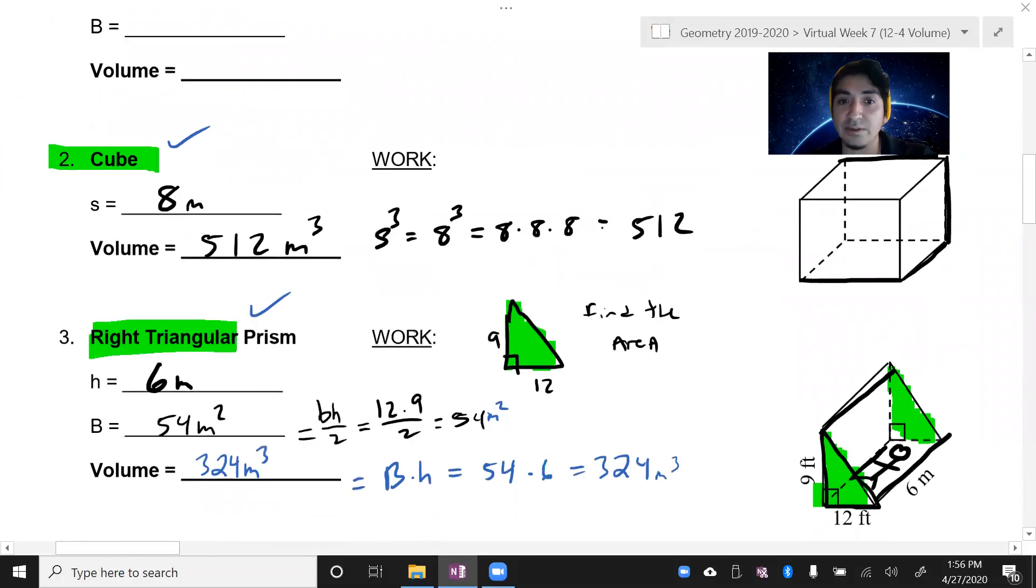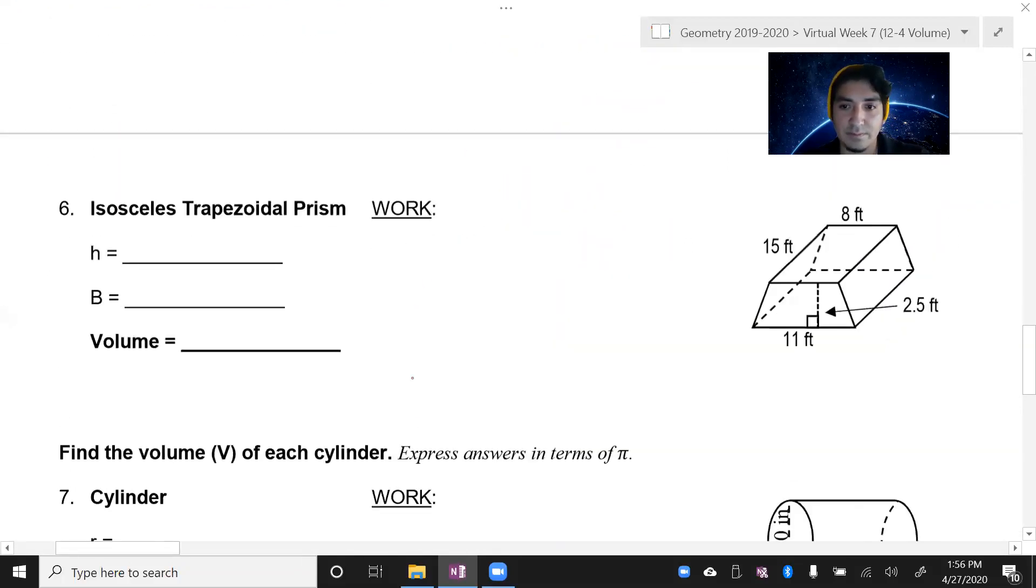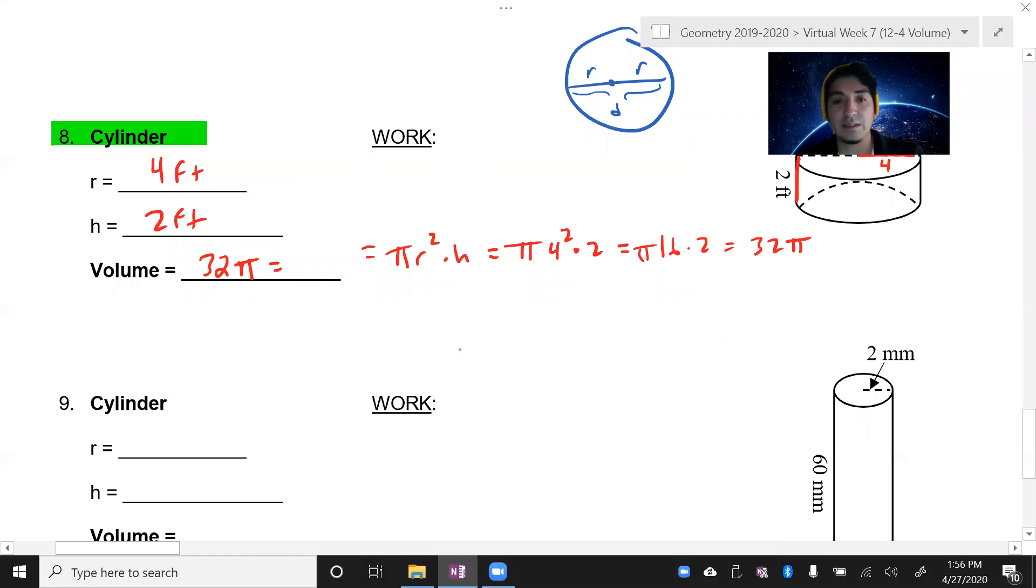So round to the nearest hundredth. I'm going to do that, so I want to multiply by my pi first. Let's get this calculator going. 32 and then pi, and that's going to give you 100.5309, and then round to the nearest hundredth, so it's 100.53. Okay, that's going to be your volume. This one says it's going to be feet cubed.